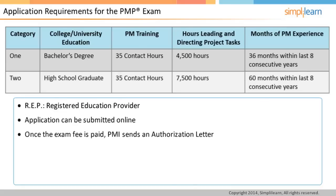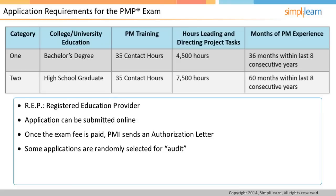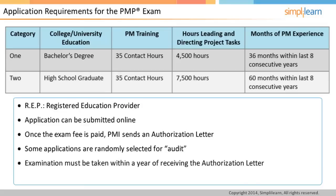Applications can be submitted online. Once the exam fee is paid, PMI sends an authorization letter. Many companies are PMI-REP and provide project management training. Simply Learn is one of them. PMI randomly audits some applications from time to time. In the event of the application being selected for audit, clear instructions will be given on the evidence that has to be physically submitted to PMI. Follow the instructions and send the evidence before authorization is given to proceed. Examination must be written within a year of receiving the authorization letter.